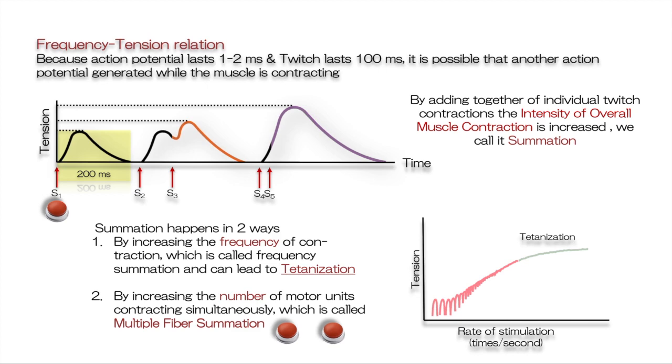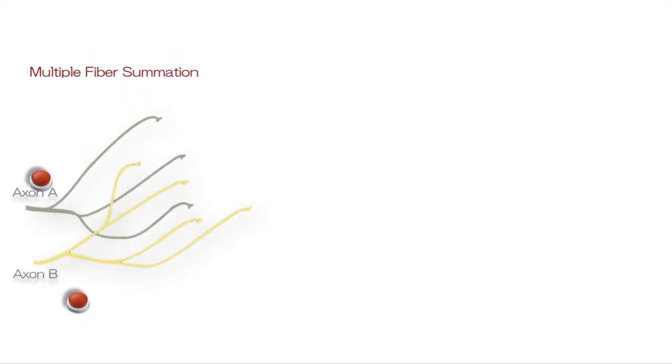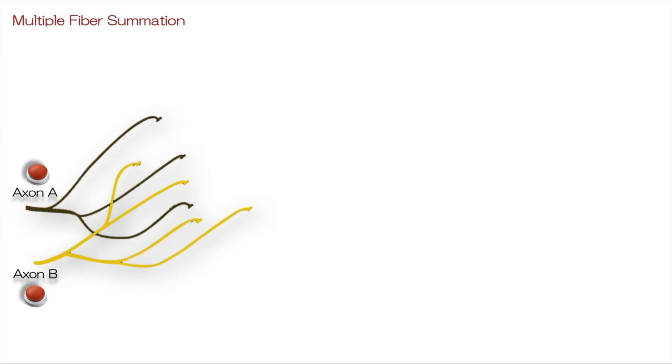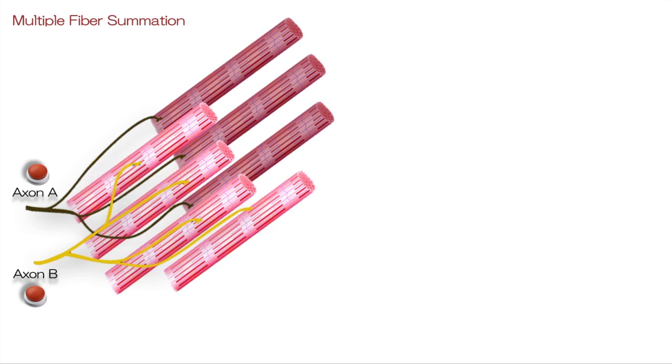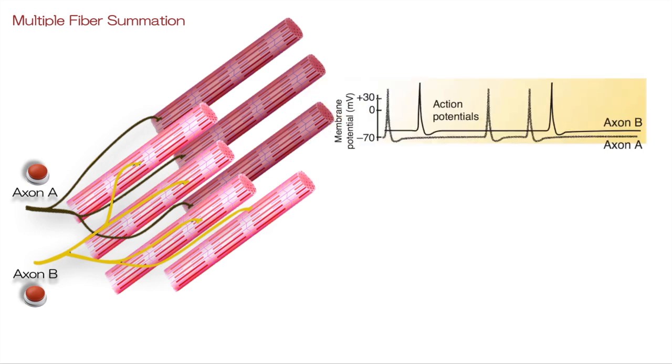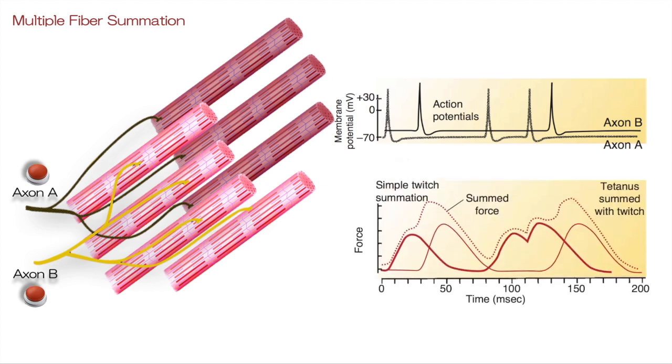In multiple fiber summation, we have two or more motor units summate with each other. Here, motor units A and B, which are controlling different bunches of muscle fibers, get involved. If we record the action potentials in these two units, the tension produced by both of them will vary based on the frequency of the action potential.